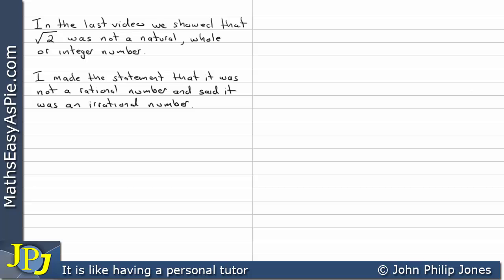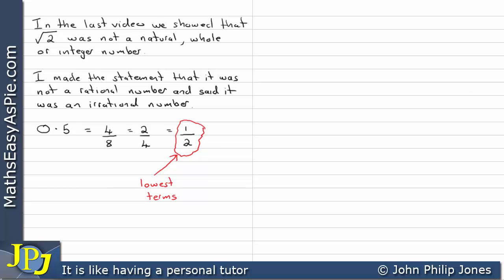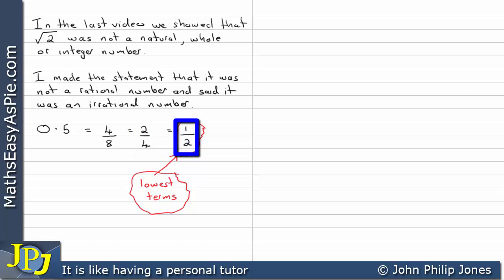We've already shown in the previous video with the number line that it was not a natural, whole, or integer number. So if I now show that it is not a rational number, then it is an irrational number. First, let's remind ourselves what a rational number is. Here we have 0.5, which can be expressed as 4 over 8, reduced to 2 over 4, and further reduced to 1 over 2. When we have 1 over 2, we know that this is in its lowest terms — there are no more factors that allow us to reduce it further.